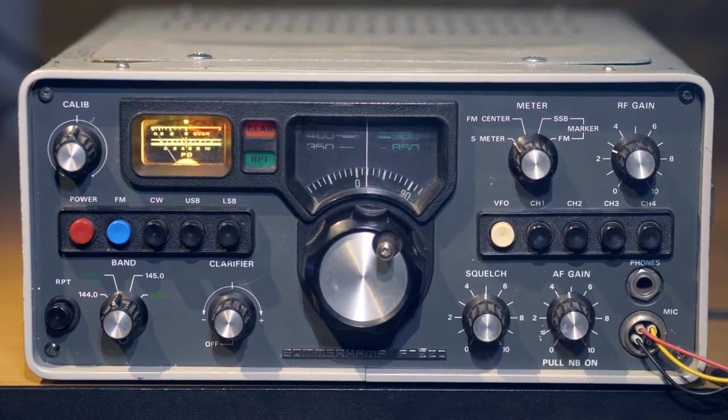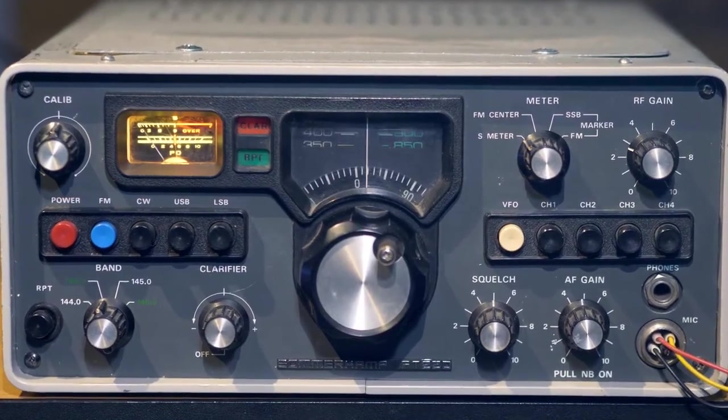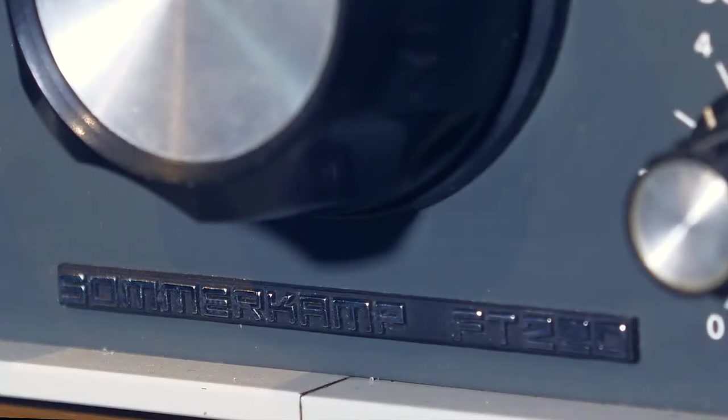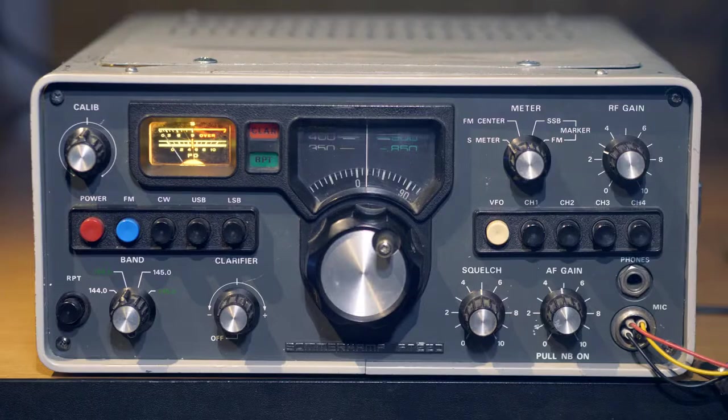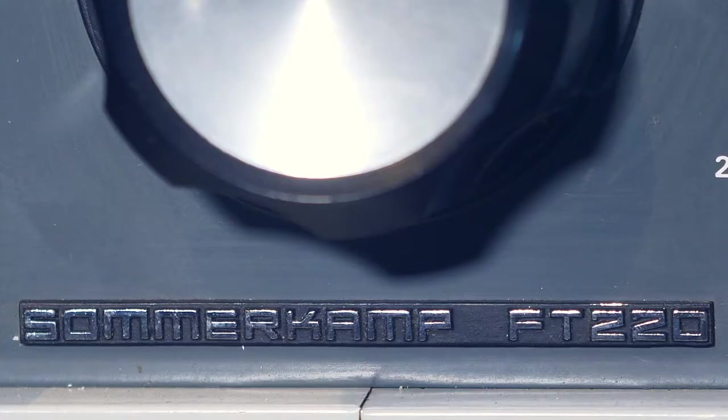The FT-220 transceiver manufactured by the Japanese company Yaesu was sold in many countries under the Sommerkamp trademark, it also had the FT-220 model. Sommerkamp FT-220 and Yaesu FT-220 are the same thing, just different brands under which it was sold. We won't figure out why it happened now, but rather let's talk about electronics, how the transceiver is arranged and what characteristics and capabilities it has.